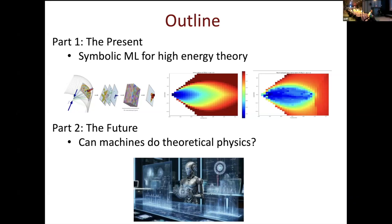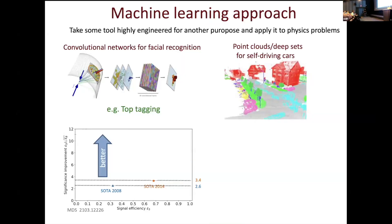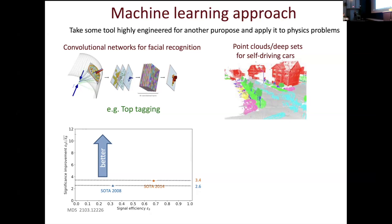The second part will be about the future — the path forward to getting machines to do the kind of theoretical physics that a lot of people are excited about. First, I want to make one slide about what machine learning has been doing over the last 10 years, which is mostly taking some tool developed for another purpose — like convolutional neural networks for facial recognition or point clouds for self-driving cars — and applying it to something totally different, like top tagging.